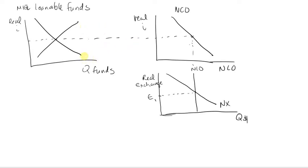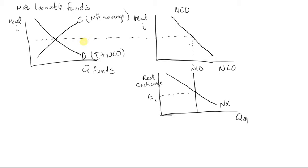Here we have the market for loanable funds. Demand comes from domestic investment plus NCO, and supply comes from national savings. If the government runs a surplus — spending less than what they collect in tax revenues — that's going to affect the supply of loanable funds. The supply has two components: private and public savings, savings from households and savings from government. If government savings increase, that's going to shift the supply of loanable funds to the right.